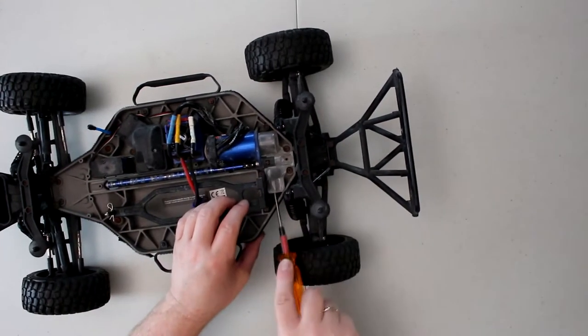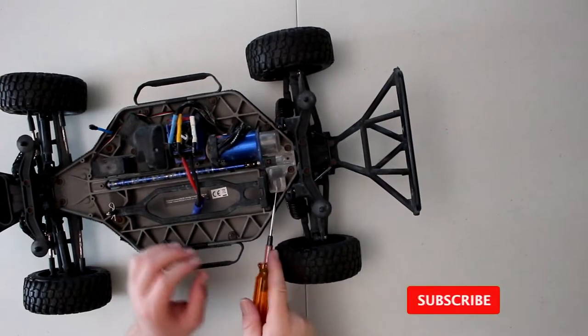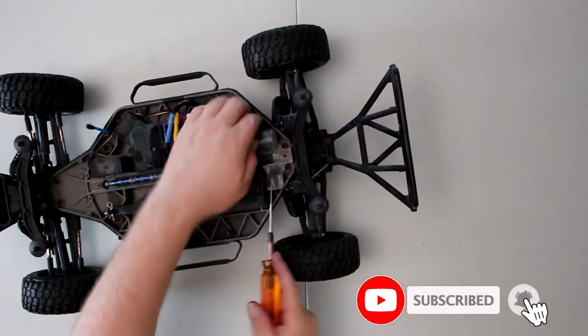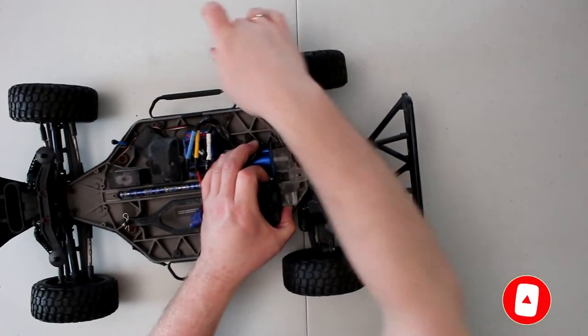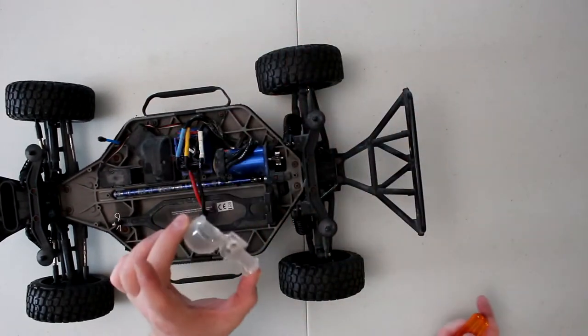There is a 2mm screw right here. We're just going to grab our screwdriver in the corner to pop this guy out. Sometimes they are a little bit stubborn.